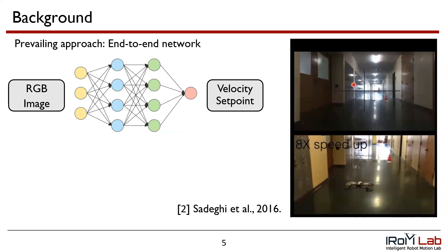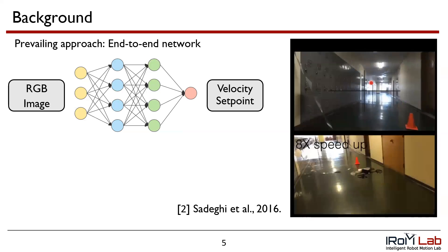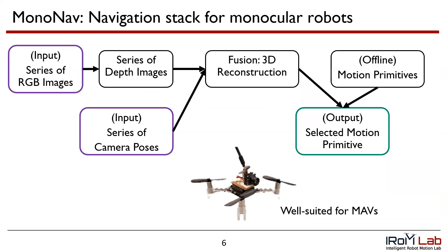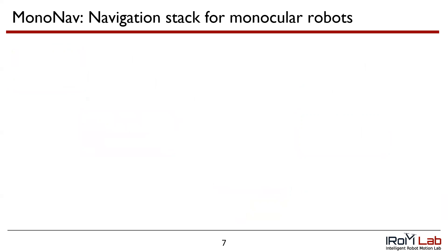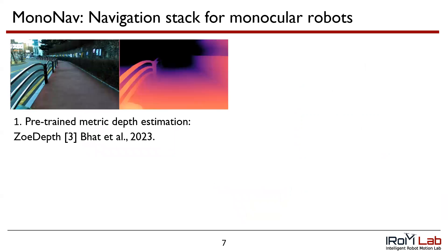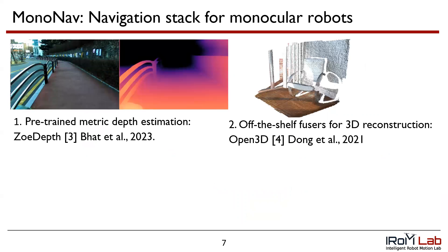If the MAV had access to a map instead, the user would have more flexibility in planning and control. To that end, we present MonoNav, a navigation stack for monocular robots. We start by taking a series of RGB images and camera poses which are readily available from the MAV, then convert the RGB images into metric depth estimates. We then fuse the poses and the depth estimates into a 3D reconstruction that builds as the MAV moves through the scene. For planning, we use motion primitives — in principle, conventional path planning approaches such as RRT* or A* could be applied as well. We accomplish this by leveraging pre-trained transformer-based models for monocular depth estimation in combination with off-the-shelf fusion and planning techniques.